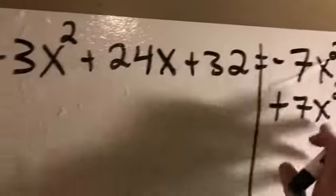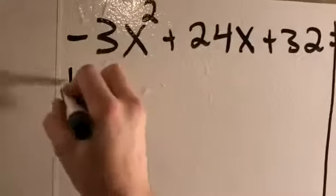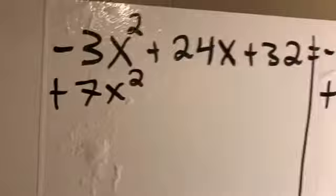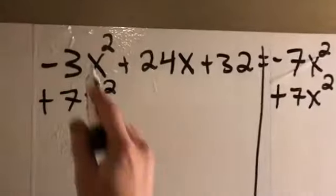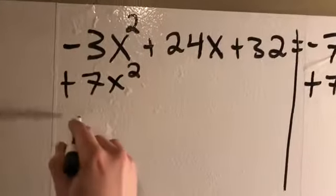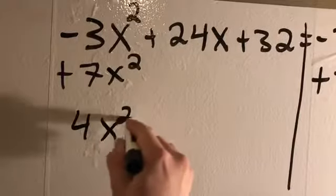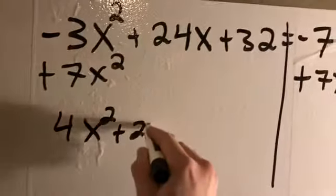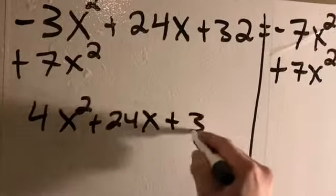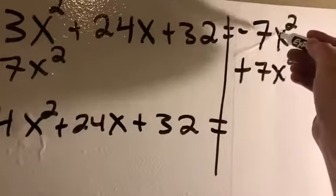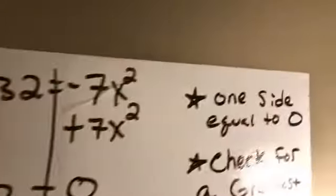So now -3x² + 7x² is 4x². I haven't touched the 24x. I haven't touched the 32. -7x² + 7x² is zero. So I have one side equal to zero now.